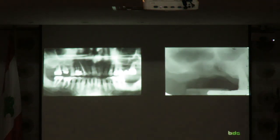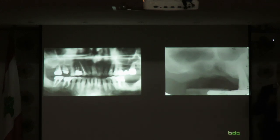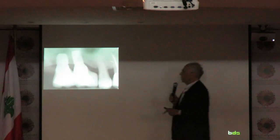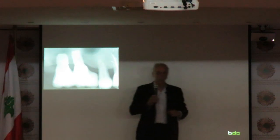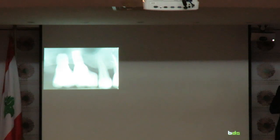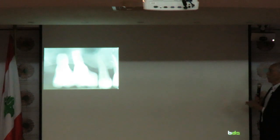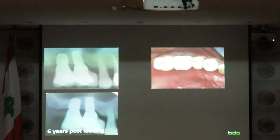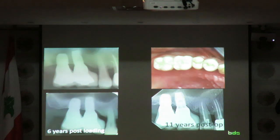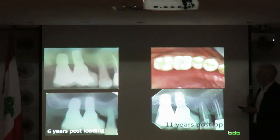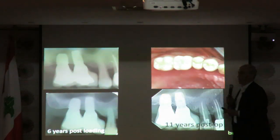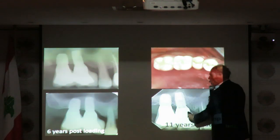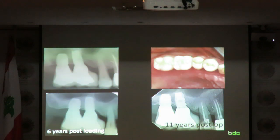Look at this situation — today 99% would prescribe an external sinus lift. The patient didn't want to do that, so we placed two implants. Where did we place them? One taking anchorage in the septum — you have to locate it properly, go right in there, and impact the implant, first preparing the site properly. One implant is 7mm and the other is 8.5mm. This is the restoration: six years post-loading and 11 years post-loading. We simplified the case by using wide implants placed in the proper sites — not here, but a little further back, anchored in the septum, which is very good cortical bone where we can have good primary anchorage.